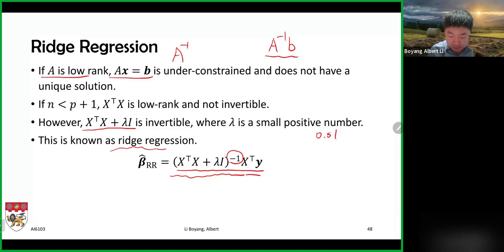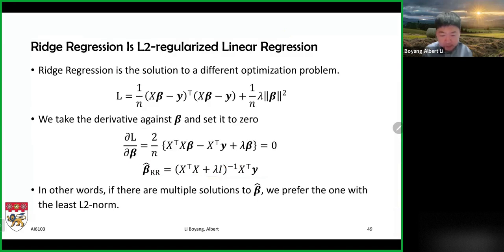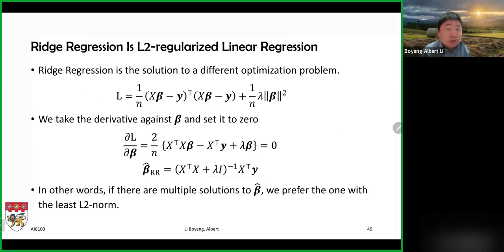That solution is known as the ridge regression solution to linear regression. The first reason for ridge regression is straightforward: we don't have an invertible matrix, and we use a mathematical trick to ensure an inverse can be found. It turns out there is a deeper reason underlying this mathematical trick.